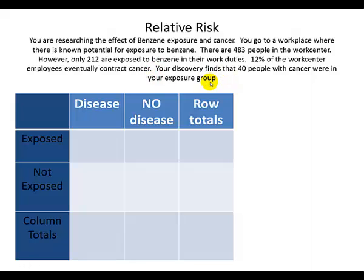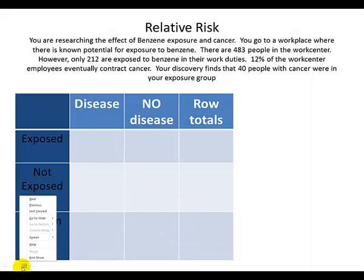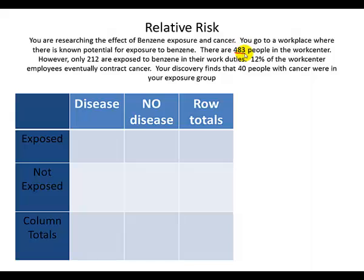The first thing we need to do is identify what we have in our story problem and input it into our 2×2 table, labeled with those who have cancer, those who don't, and the row totals, as well as those who have been exposed, those who have not been exposed, and the column totals. We'll take that one step at a time. First, there were 483 people in the work center, so we put that in the bottom corner — that tells us everybody at the work center.